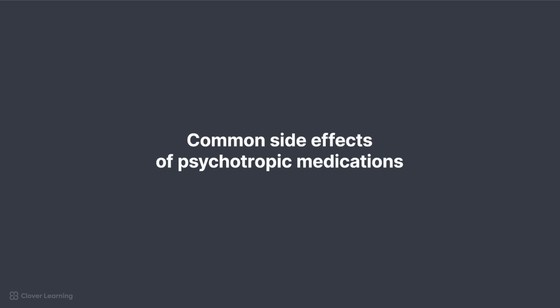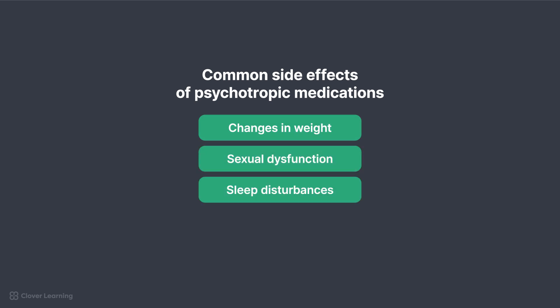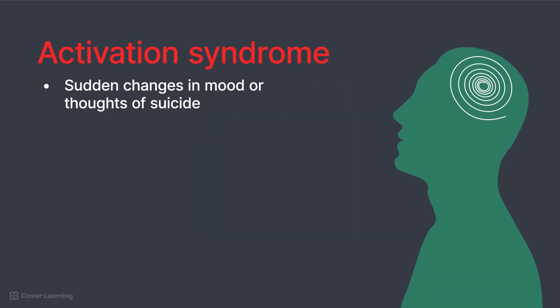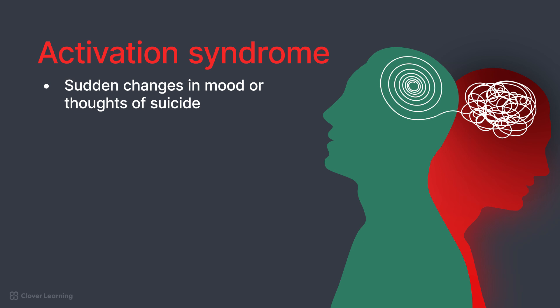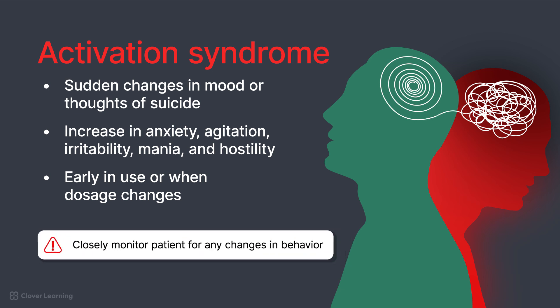Although psychotropic medications are extremely beneficial in treating various mental disorders, there are side effects that appear across many classes, such as changes in weight, sexual dysfunction, sleep disturbances, and cognitive changes like memory or concentration difficulties. A serious side effect is sudden changes in mood or thoughts of suicide, called activation syndrome, which is characterized by an increase in anxiety, agitation, irritability, mania, and hostility — either early in use or when there is a dosage change. It is very important to closely monitor patients during these timeframes for any changes in behavior.